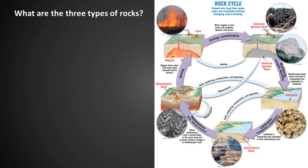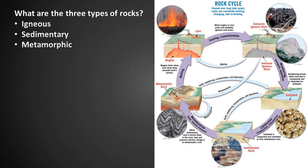Since we're talking about rocks, it is good to review the three main kinds of rocks: igneous, sedimentary, and metamorphic. We'll spend more time looking at these different kinds of rocks later. The figure shows the rock cycle and the different processes by which rocks can change from one type to another. You can find this figure in the textbook.